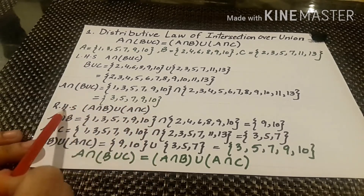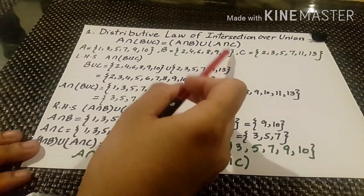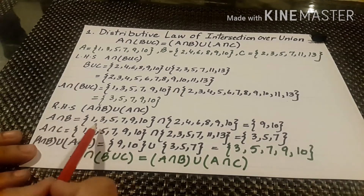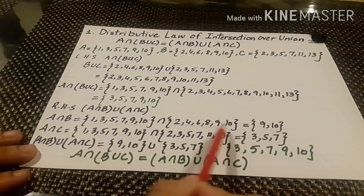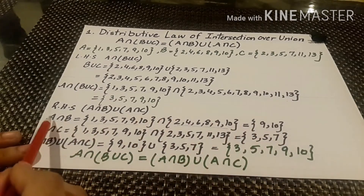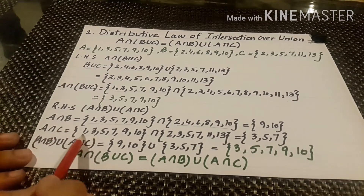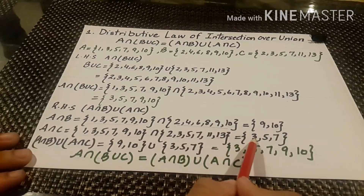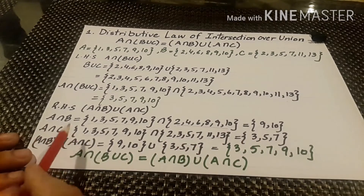Now taking the right hand side of the law, that is A intersection B union A intersection C. We first take A intersection B — we write set A intersection set B and the common values are 9 and 10. Then A intersection C — we write set A intersection set C, and the common values are 3, 5 and 7.